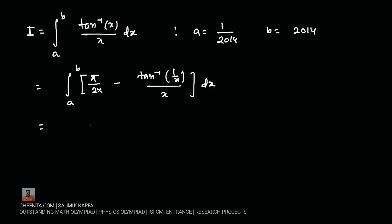Now from here we can break the integration in two parts. It will look like a to b pi by 2 is a constant so that can come out, 1 by x dx minus a to b tan inverse 1 by x by x dx.